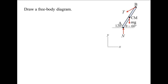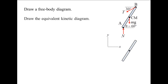The angle adjacent to theta is 120 degrees. Since the distance between points A and C and the distance between points A and B are known, the remaining two angles in the triangle formed by points A, B, and C can be determined. Therefore, the tension acts to the left and downward 30 degrees from the horizontal. Next, draw the equivalent kinetic diagram. Select a positive direction for rotation. Draw the components of the acceleration of the center of mass and draw the moment about the center of mass, I_CM times alpha.